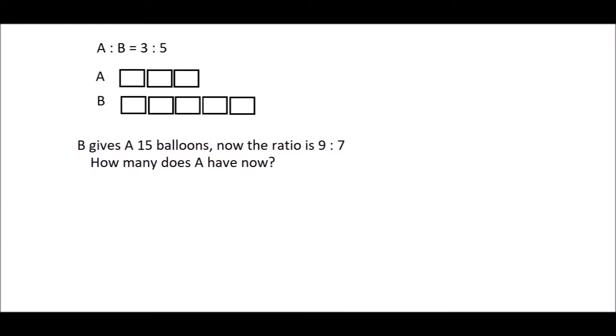In this question, we need to find out what doesn't change. Okay, in this example, the one that doesn't change is not A, because A gets more. It's not B, because B loses some balloons. But the one that doesn't change is the total of balloons of A and B.